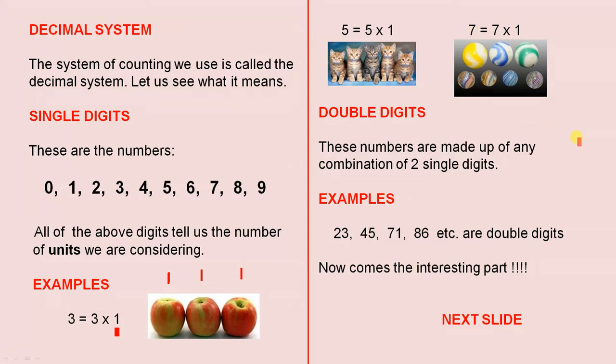We move on to double digits. These numbers are made up of any combination of two single digits. So naturally numbers like this are larger than these ones. And they're called double digits because they have two single digits in each number.